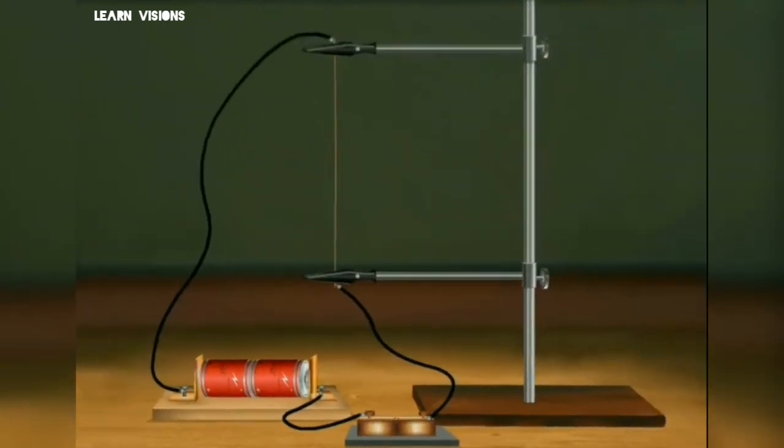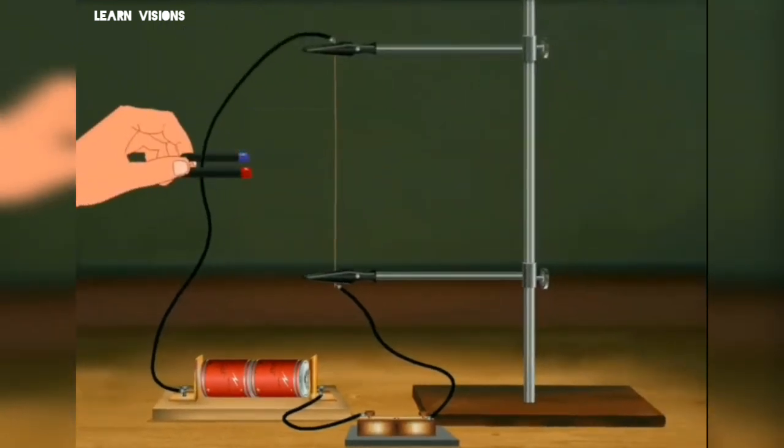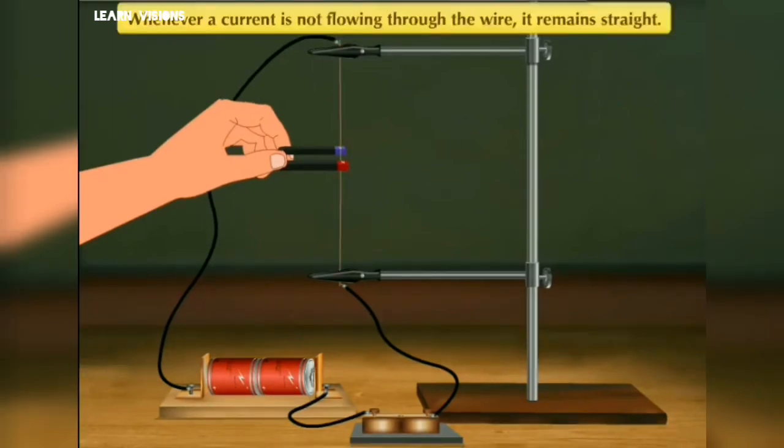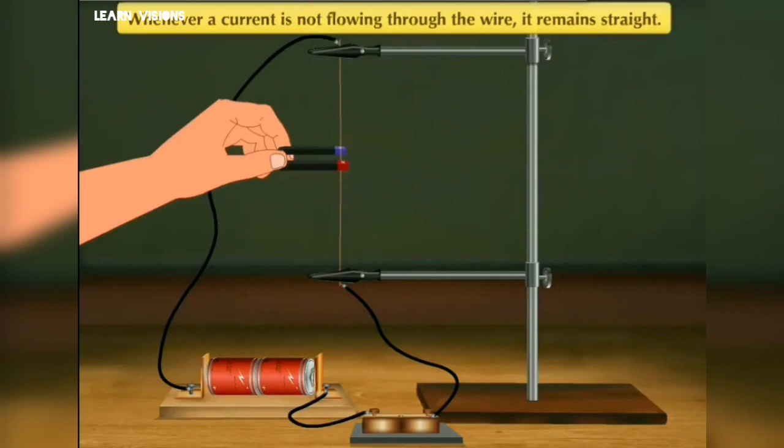Firstly we shall take a horseshoe magnet and keep it in such a way that copper wire is at the middle of magnet. When current is not flowing through the wire, the wire is straight. Let's mark the position of wire, point A.